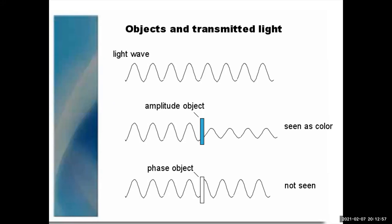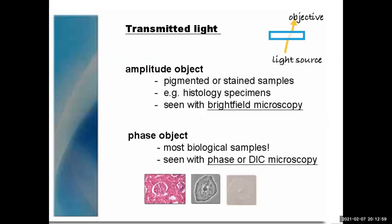Specimens can be referred to as amplitude objects and phase objects. Phase objects are basically most things — do they shift the phase of the light when it goes through them? Yes. A lot of specimens are phase objects. How do you know? Just put them on the phase scope — oh, look, I can see it, it's a phase object, it shifted the phase.